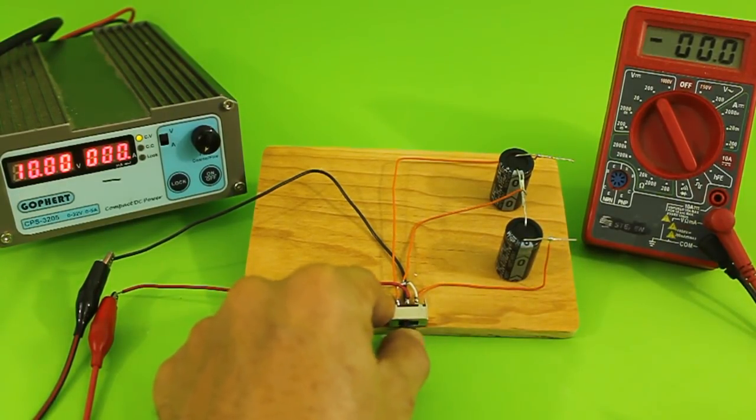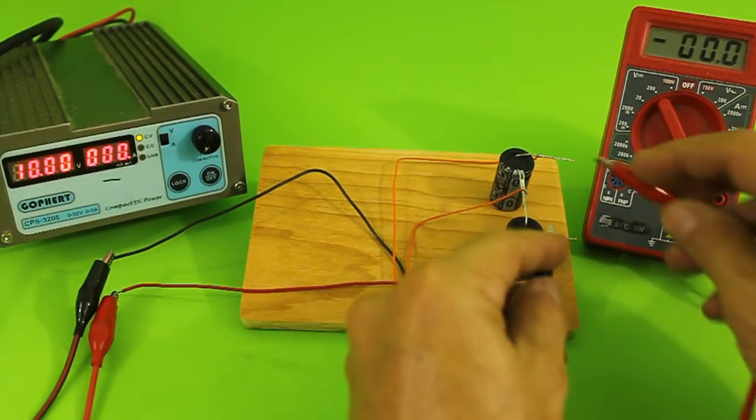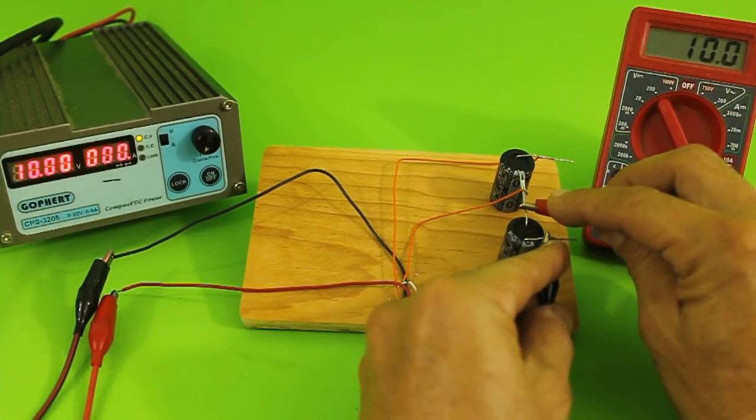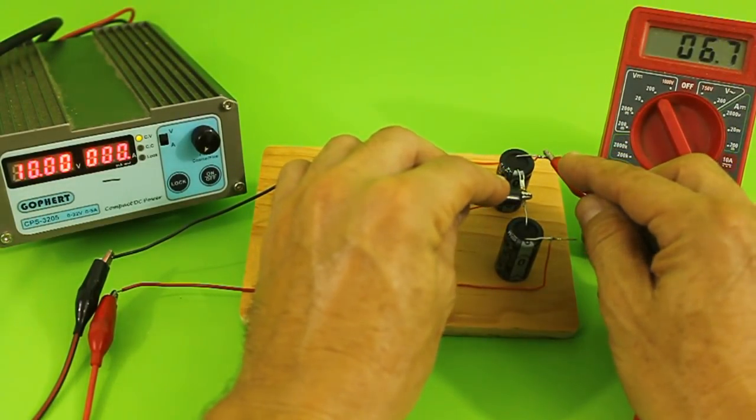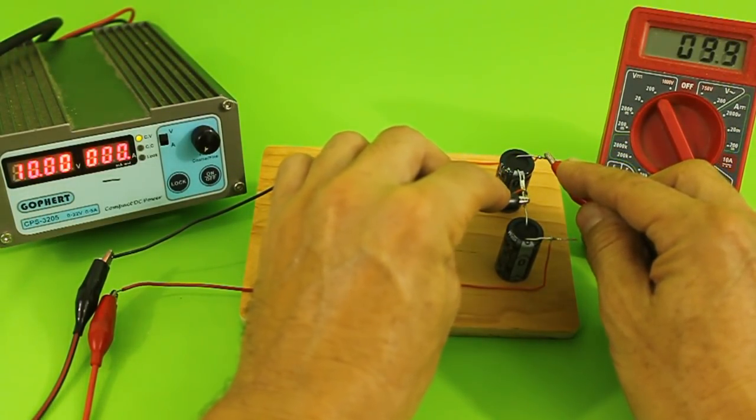Now, I move the switch to the other position. And here we have 10 volts, and the upper capacitor is also charged.